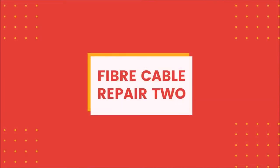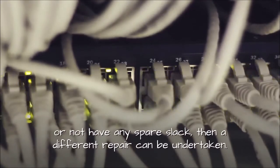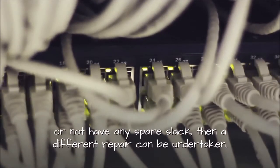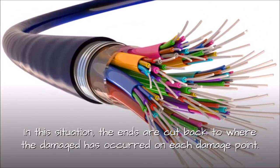Fiber Cable Repair Two: If the link cable has additional damage or does not have any spare slack, then a different repair can be undertaken. In this situation, the ends are cut back to where the damage has occurred on each damaged point.